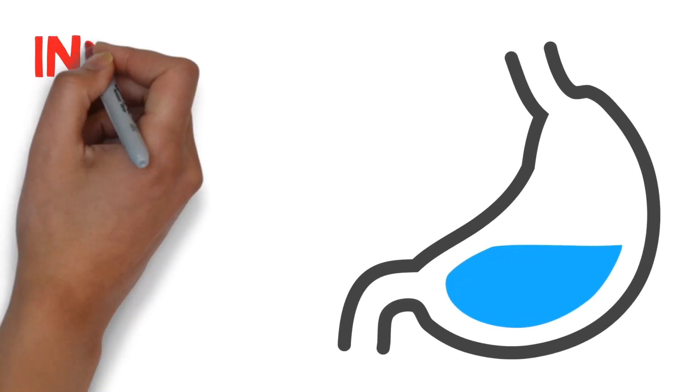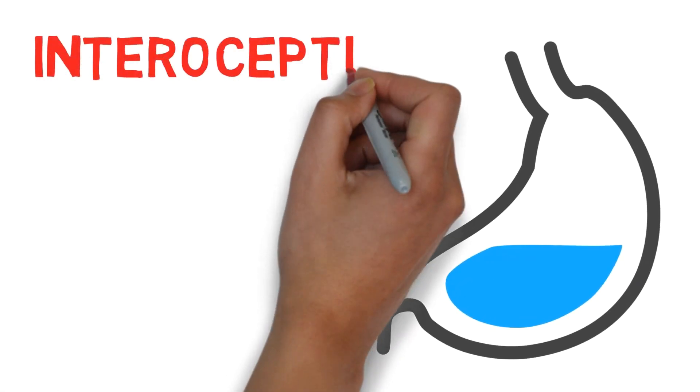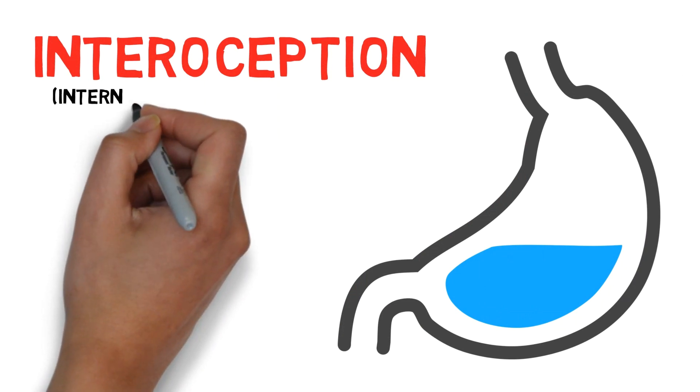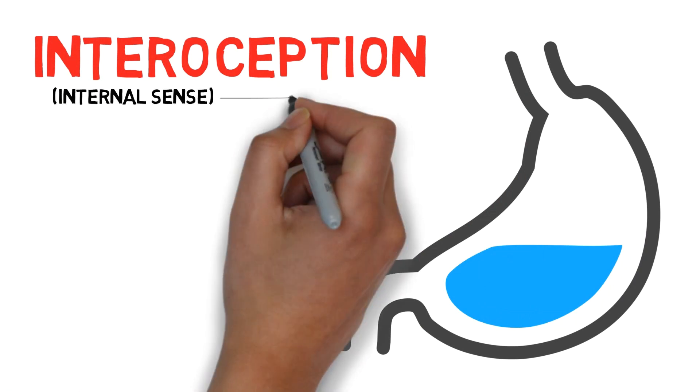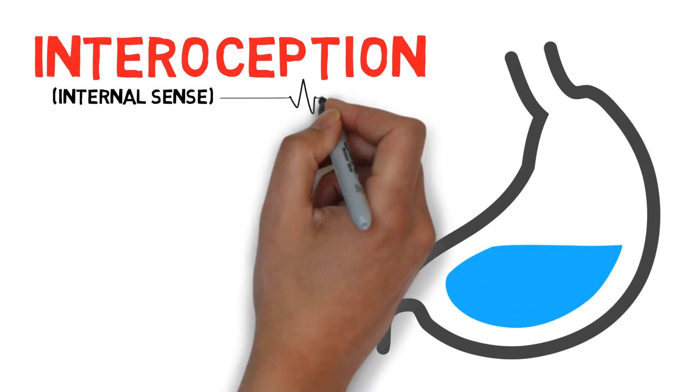Interoception is our internal body sense. It allows us to know if we need the toilet or if we're hungry. But what does it mean to be over or under-sensitive to it and what might that look like?